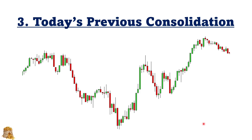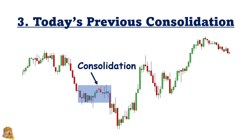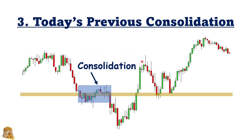Today's previous consolidation can also serve as the support and resistance levels. After the market opens, it goes down and then consolidates a little bit. We can draw a horizontal level across the consolidation. Then the market goes down and goes up, and here you can see it testing today's previous high. And then the market goes down to retest the consolidation — the first time and the second time. So previous consolidation in today's chart can also serve as support and resistance levels.